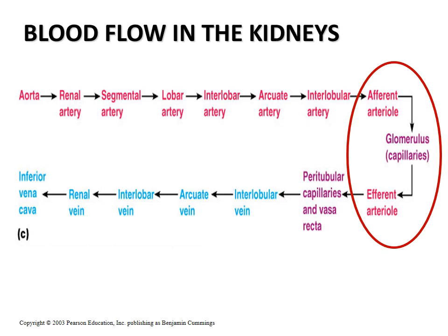From the renal artery, blood divides into segmental artery, lobar artery, interlobar artery, arcuate artery, and interlobular artery. It then forms the afferent arteriole, through which blood enters the tuft of capillaries called the glomerulus. Blood leaving the glomerulus passes through the efferent arteriole, then forms peritubular capillaries in cortical nephrons.